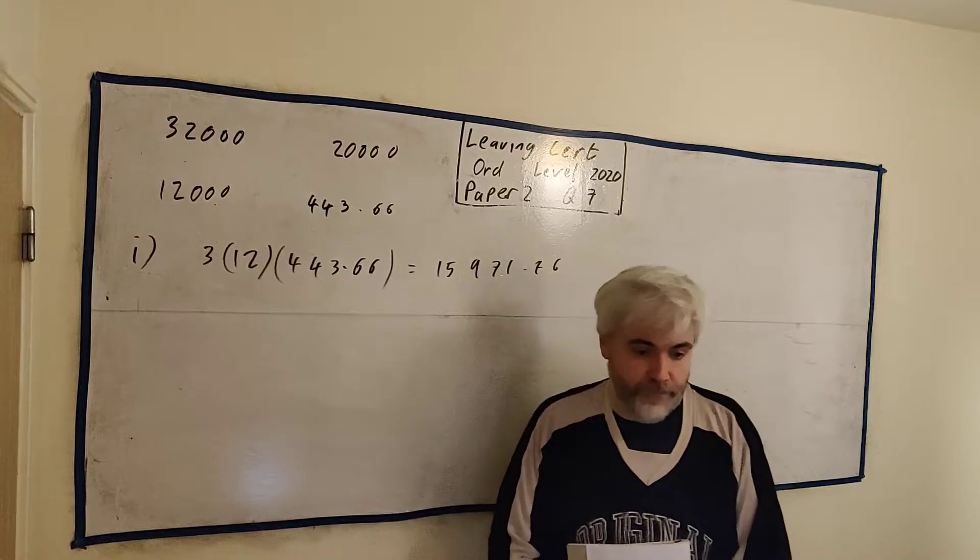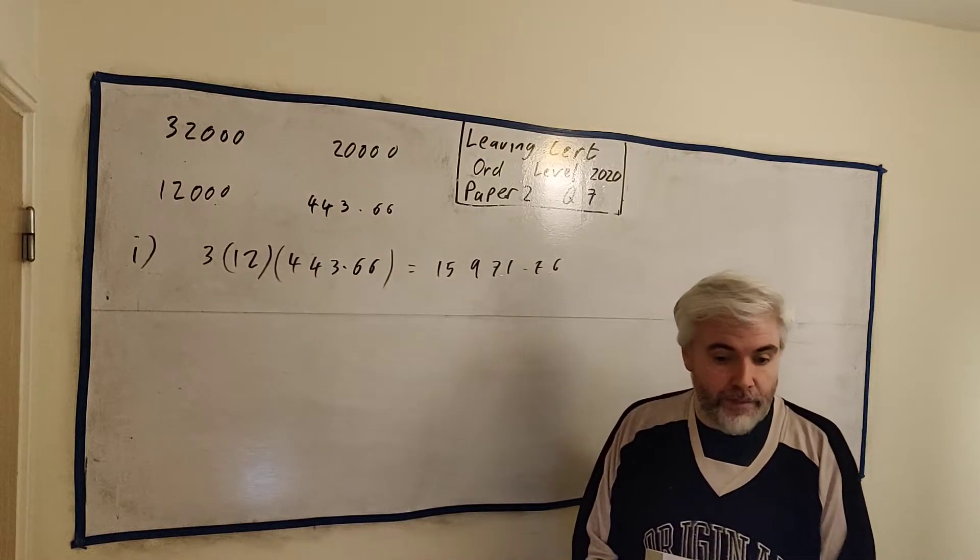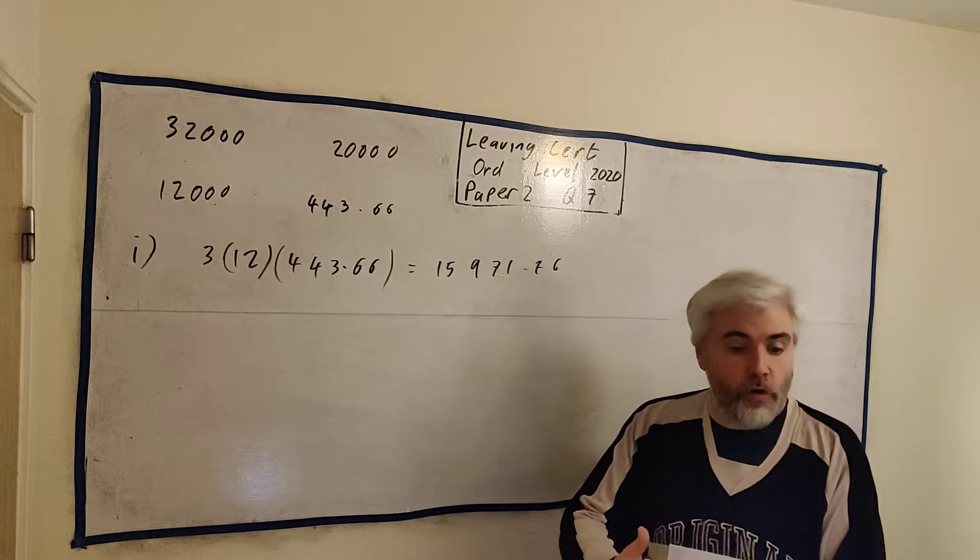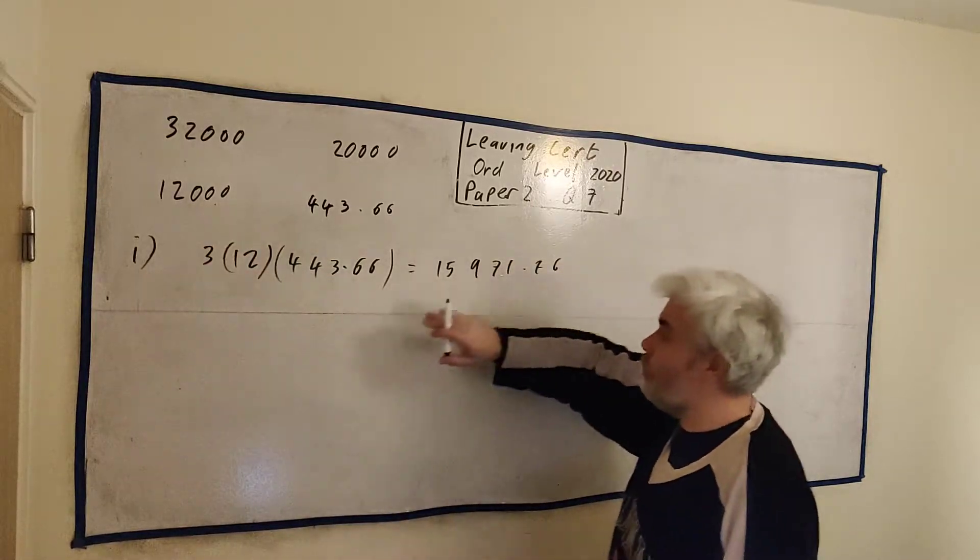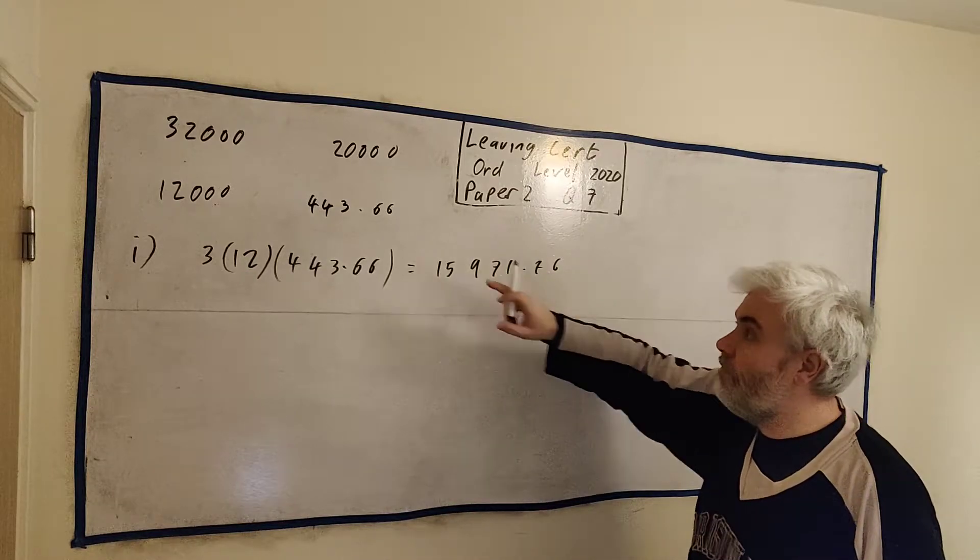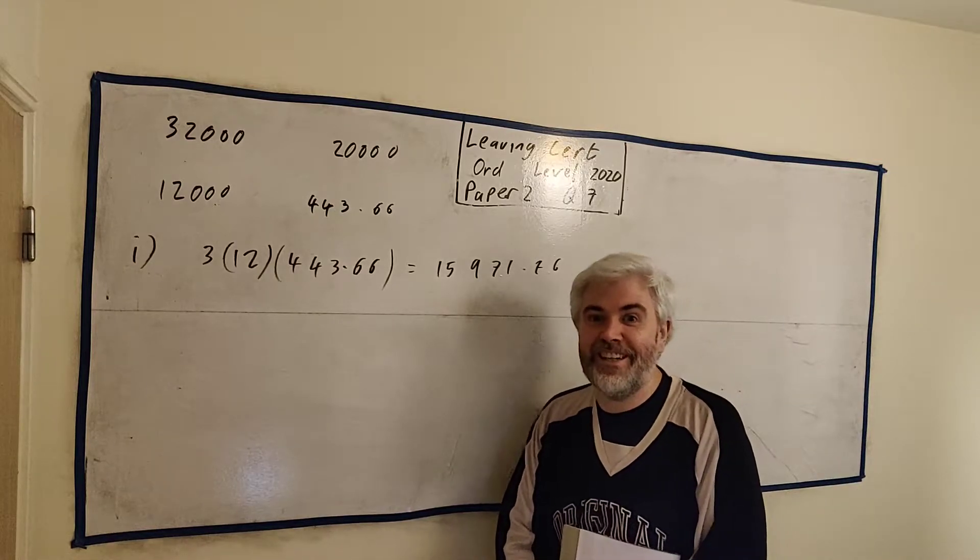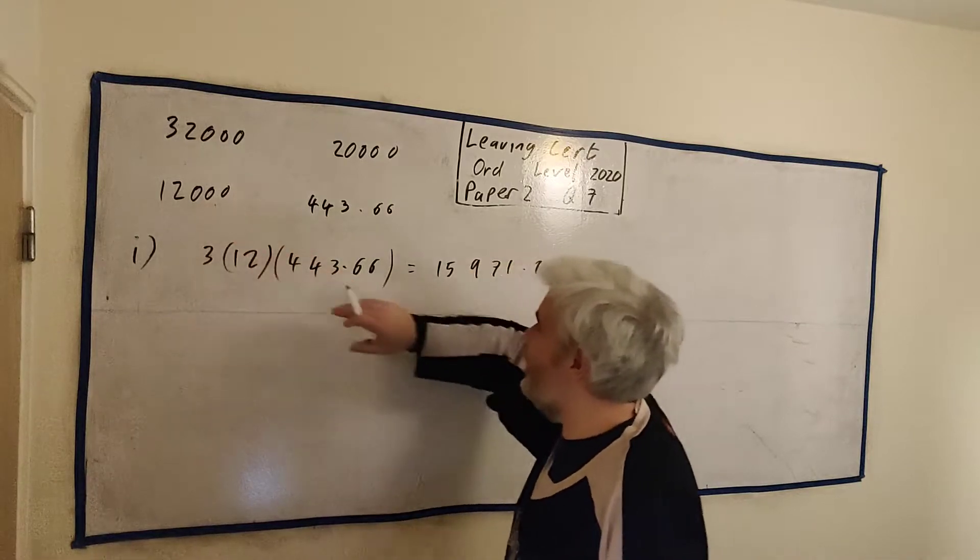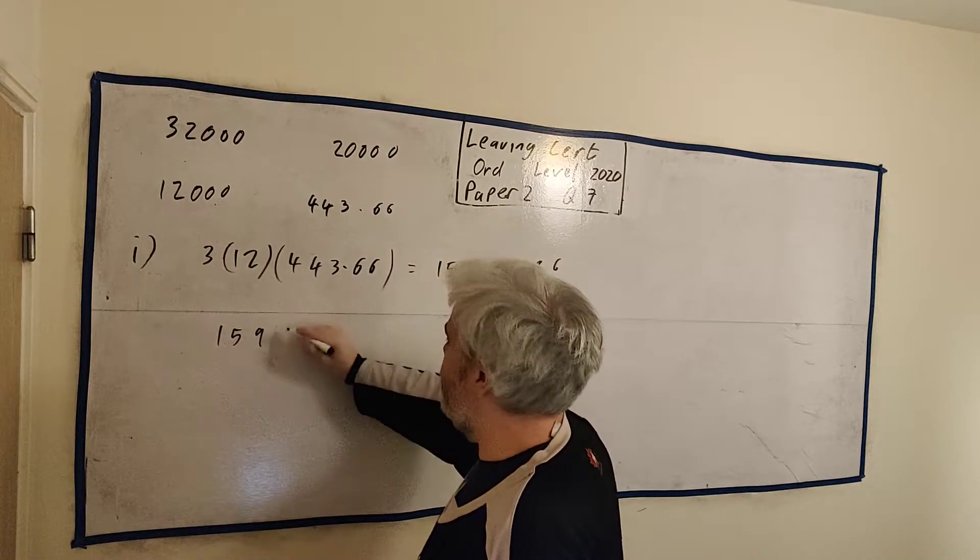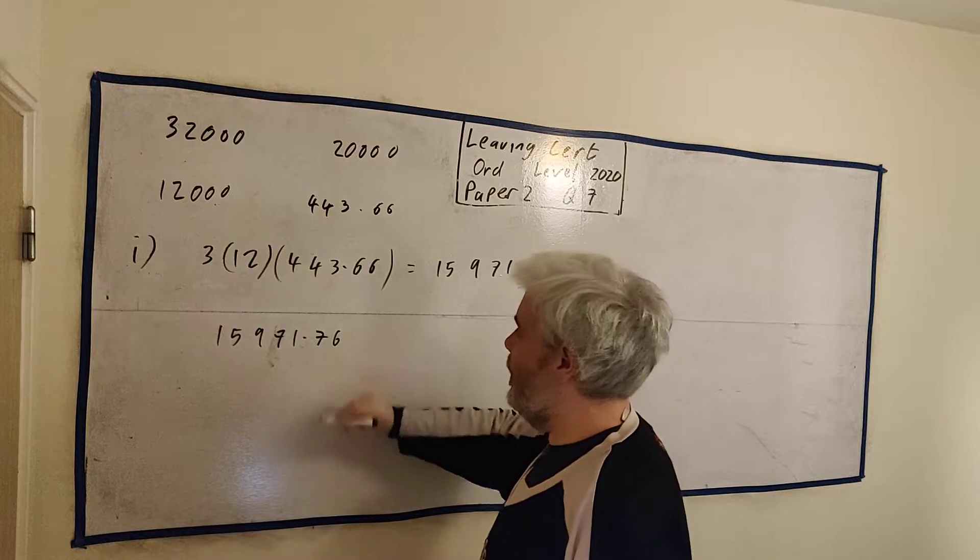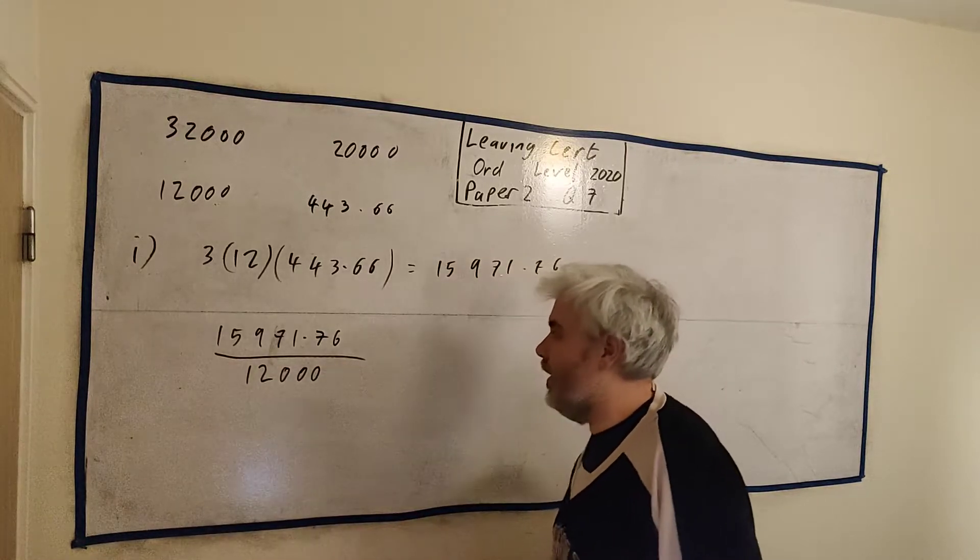Always check if the numbers make sense in your head. He needed to borrow $12,000, so the fact that he paid back nearly $16,000 over the three years makes sense because the bank wouldn't give you the money if they're not going to make a little extra. Nearly $4,000 is how much money the bank made. Part two of this part A asks to show the amount that Pat repays as a percentage of the amount that he borrows from the credit union. It will show that it is 133.1%.